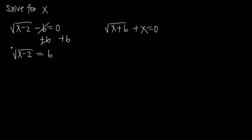Now that we have the square root isolated, we square both sides of the equation. Whatever you do to one side, you must do to the other to keep it balanced. Squaring a square root cancels those two things, leaving just what's inside — in this case x minus 2. On the right-hand side, we get 6 squared, or 6 times 6, which is 36.